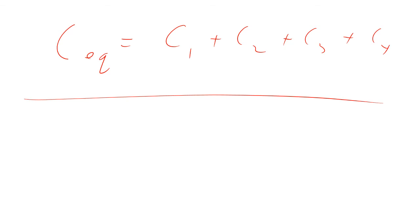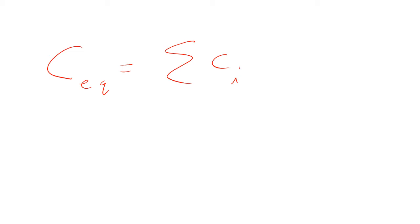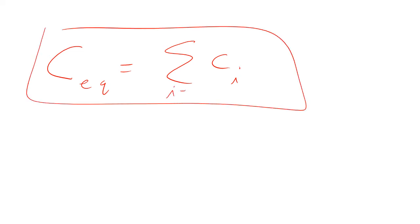Your book does the same derivation but for three capacitors, and you find that for three capacitors the equivalent capacitance is C1 plus C2 plus C3. There's a very clear pattern: for capacitors in parallel, the total equivalent capacitance is the sum of all the individual capacitors — summing from i equals 1 up to the total number of capacitors. That's how you do capacitors in parallel.